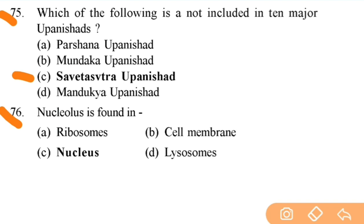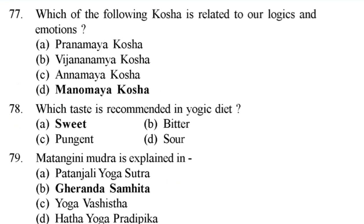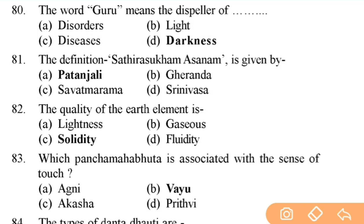Which of the following Kosha is related to our logic and emotions? Right answer is D — Manomaya Kosha. Next: which taste is recommended in a yogic diet? Right answer is A — sweet taste. Next: Vahnisara Mudra is explained in — right answer is B — Gherand Samhita. Next: the word Guru means the dispeller of — right answer is D — darkness.